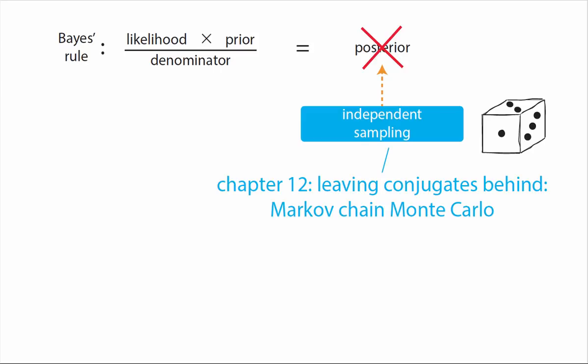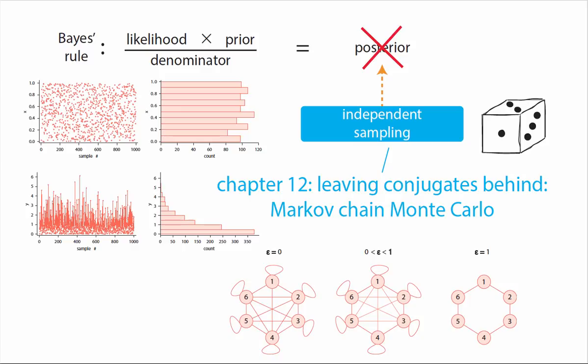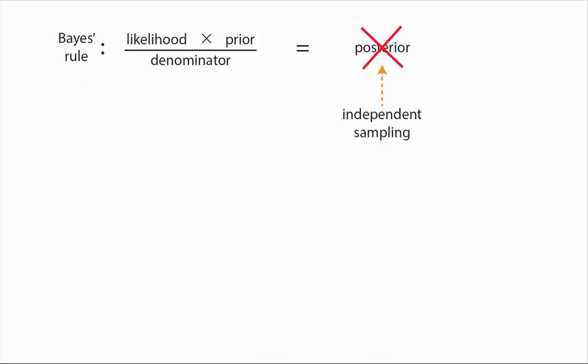In chapter 12 I talk about sampling in general and focus on methods required to independently sample from a probability distribution. However, we shall see that unfortunately, while there are many methods available to do independent sampling, none of them are practically useful generally for Bayesian inference, so we cannot use independent sampling to sample from the posterior.